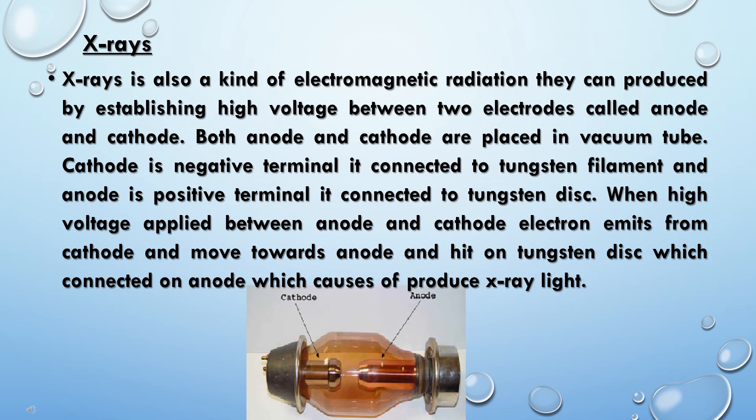X-rays are also a kind of electromagnetic radiation. They are produced by establishing a high voltage between two electrodes called the anode and cathode. Both anode and cathode are placed in a vacuum tube. The cathode is the negative terminal, connected to a tungsten filament, and the anode is the positive terminal, connected to a tungsten disc.